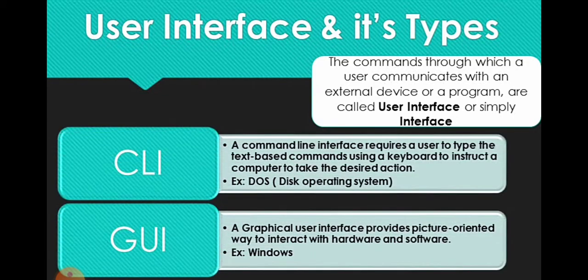In the computer there are a set of interfaces: CLI and GUI. For example, DOS — the Disk Operating System — and also Windows are present in the computer. There are two types of user interface: the Command Line Interface and the Graphical User Interface.